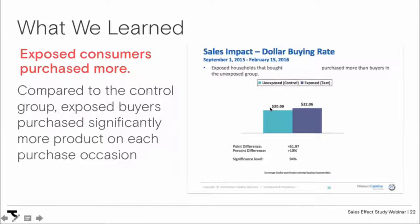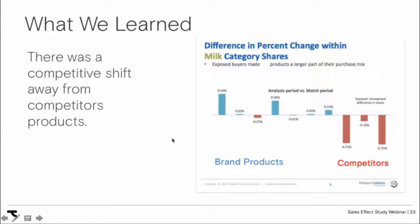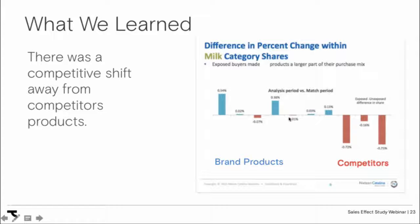If the influencer marketing worked, we'd expect to see a separation between the two lines — people who viewed the influencer content buying more than the control group. The control group is critical because it eliminates the effects of other in-market advertising or seasonality, isolating only the influencer marketing component. The study confirmed that exposed consumers did purchase more. Additionally, because they have loyalty card data, they can tell you which brands consumers bought more of and which they bought less of — even identifying competitive switching.